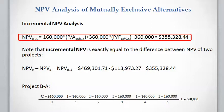The NPV of the incremental cash flow, which we can see here, is positive, so we conclude Project B is better than Project A. There is an important property of NPV: NPV(B − A) equals NPV(B) minus NPV(A). This means that if NPV of Project B is higher than NPV of Project A, we can directly conclude that Project B is the better investment.